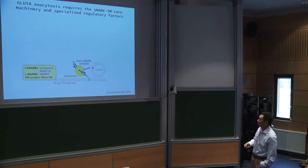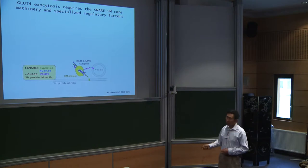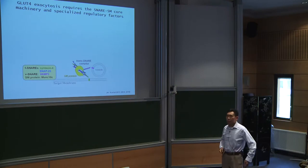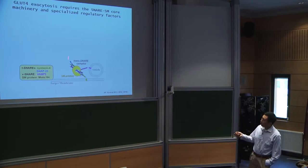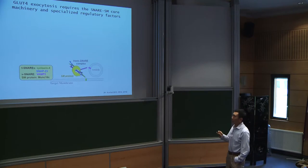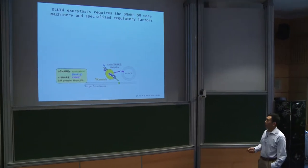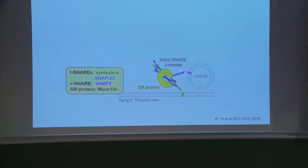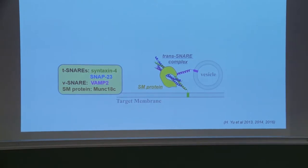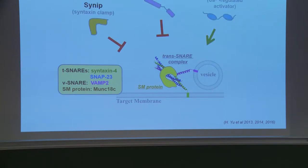Exocytosis is a vesicle fusion event, after Rab and Tether bring the vesicle and target membrane together. Vesicle fusion is driven by two classes of molecules: SNAREs and SM protein. SNAREs are membrane-anchored proteins — you have a vesicle-anchored V-SNARE and a target-anchored T-SNARE. When V-SNARE and T-SNARE meet, they spontaneously assemble into a trans-SNARE complex, proceeding toward the membrane like a zippering process, forcing the two membranes into close proximity to fuse. SM protein is a soluble protein that can bind to the trans-SNARE complex and accelerate trans-SNARE assembly. SNAREs and SM protein are the core engine for vesicle fusion.